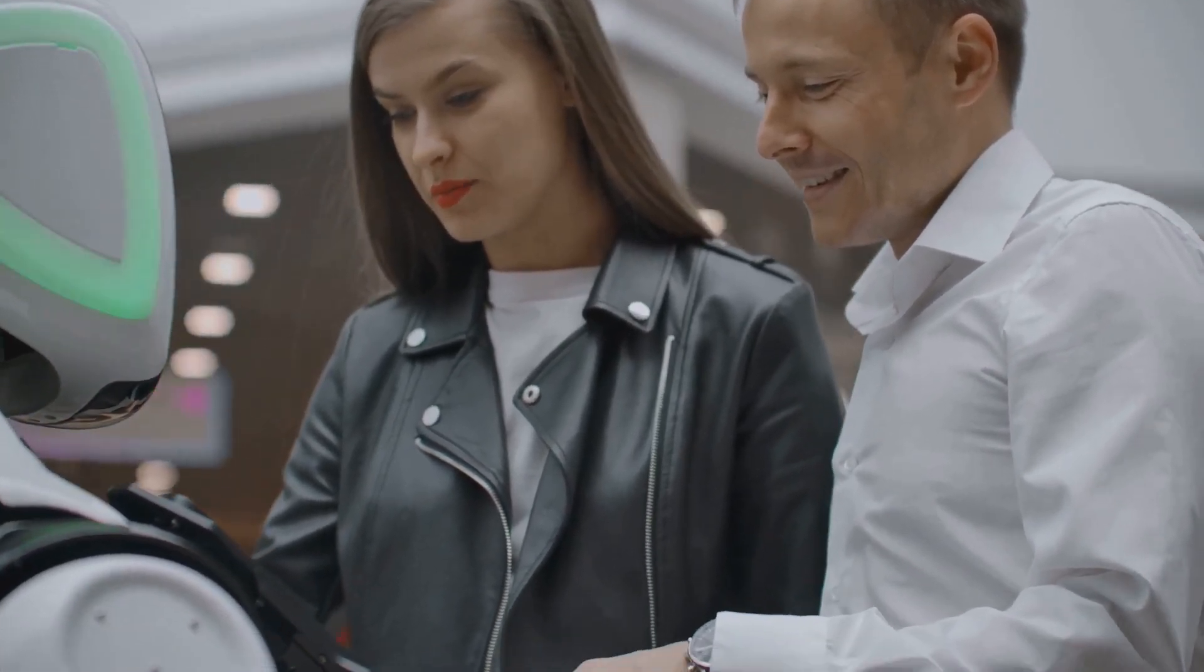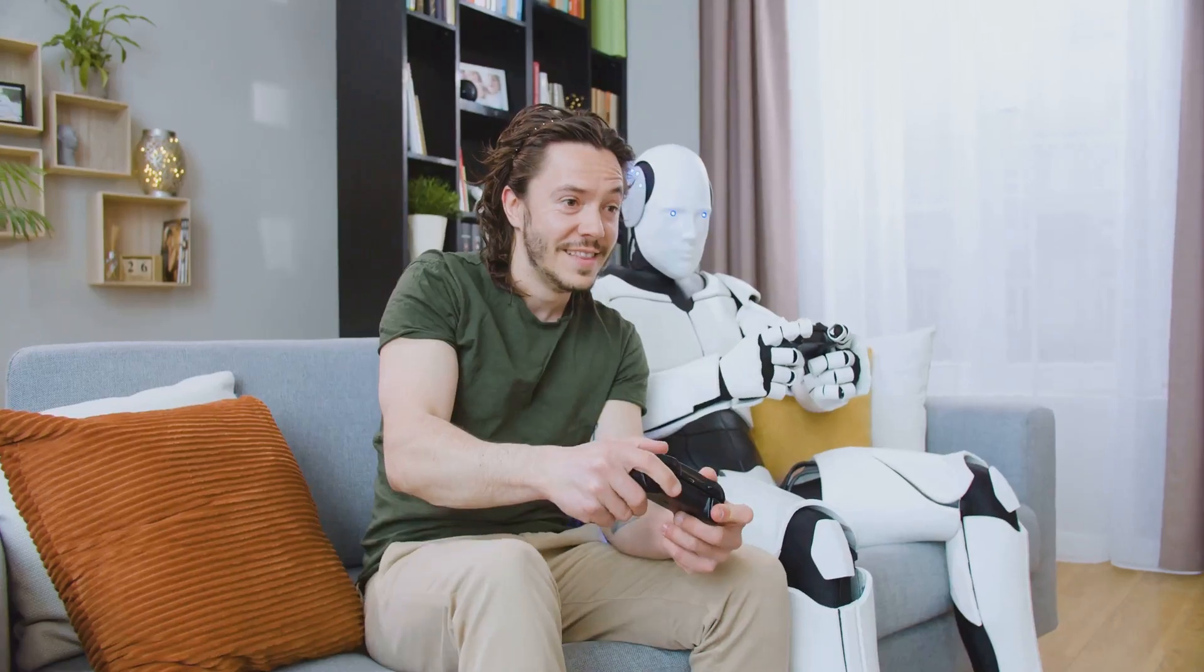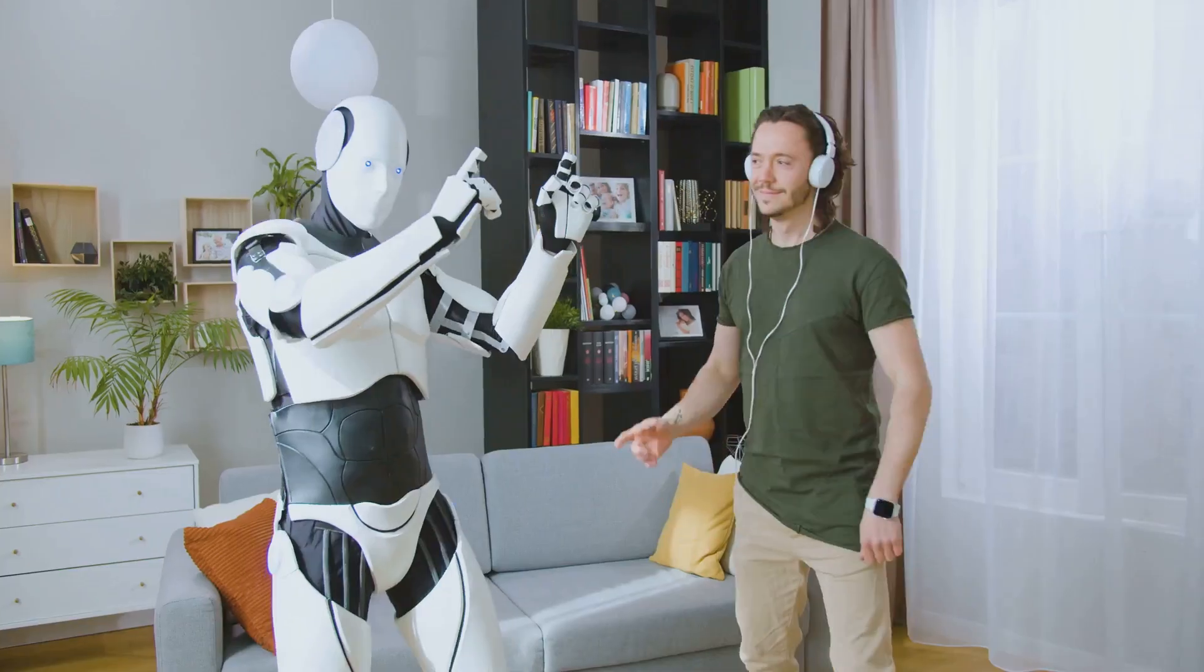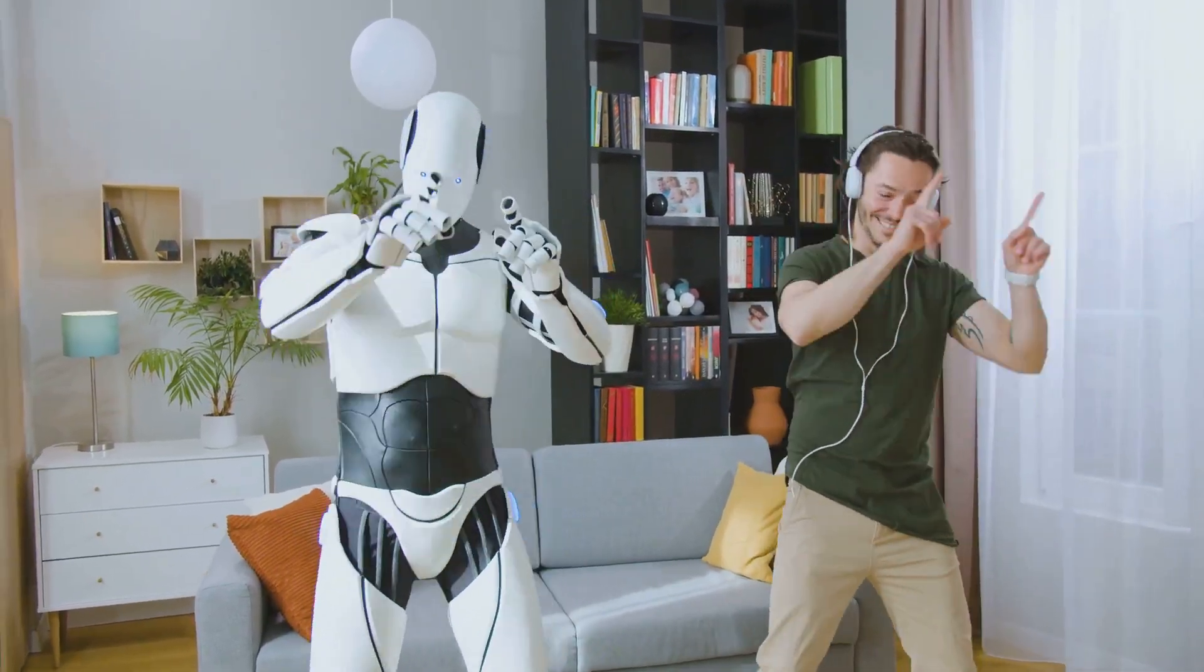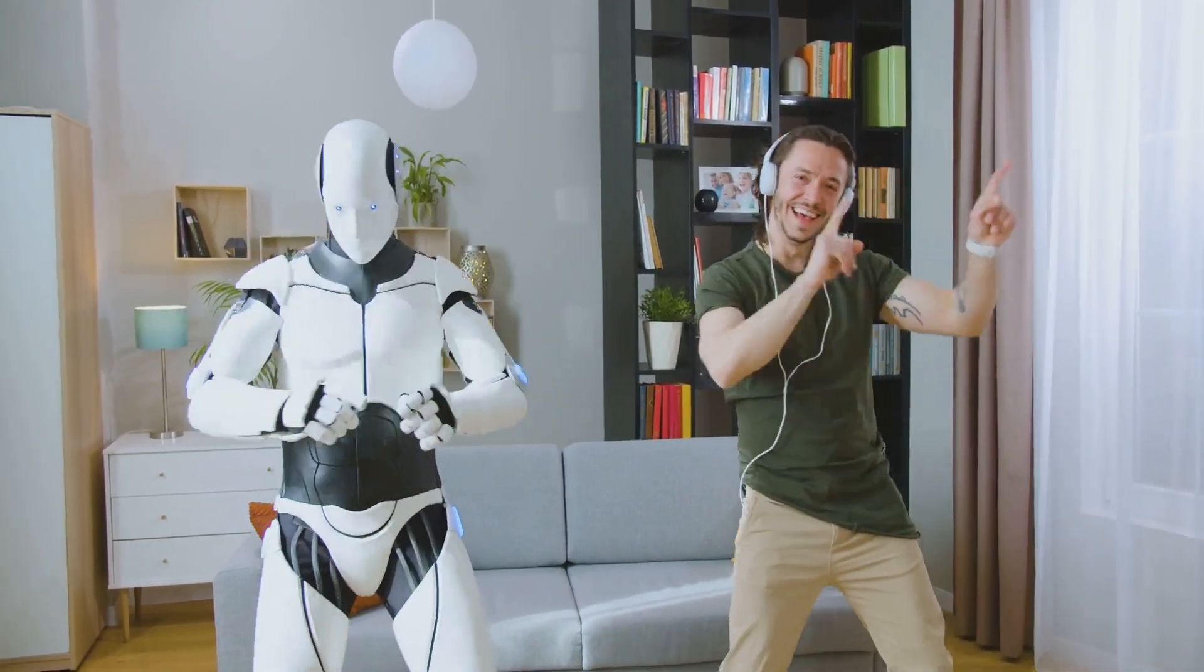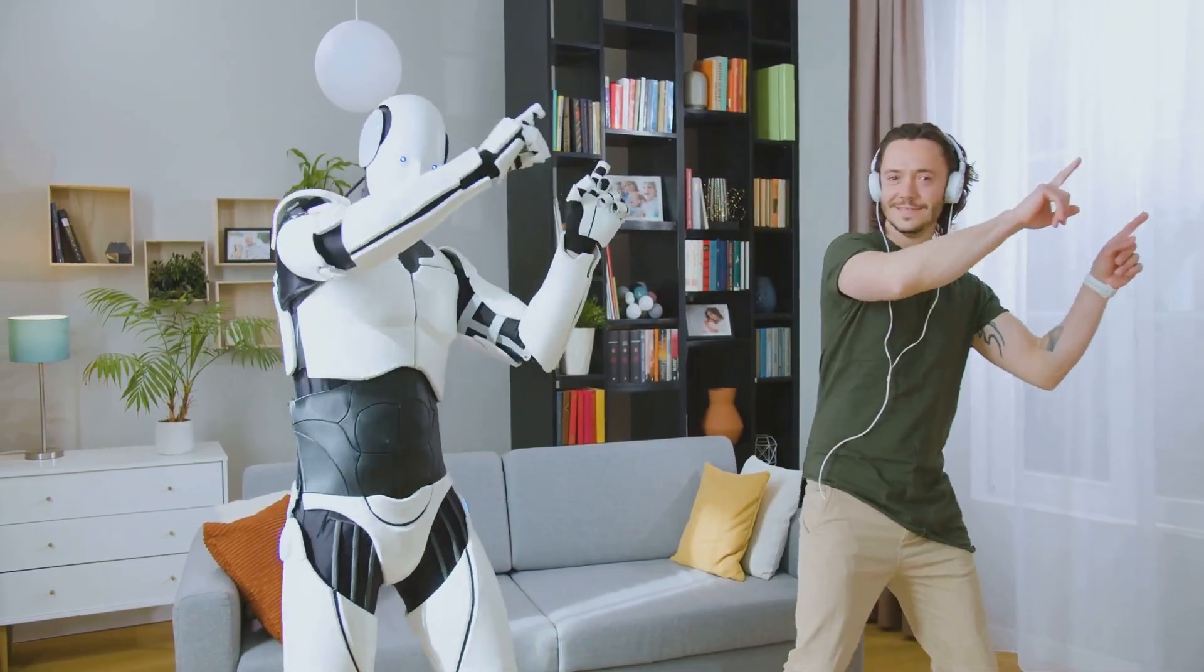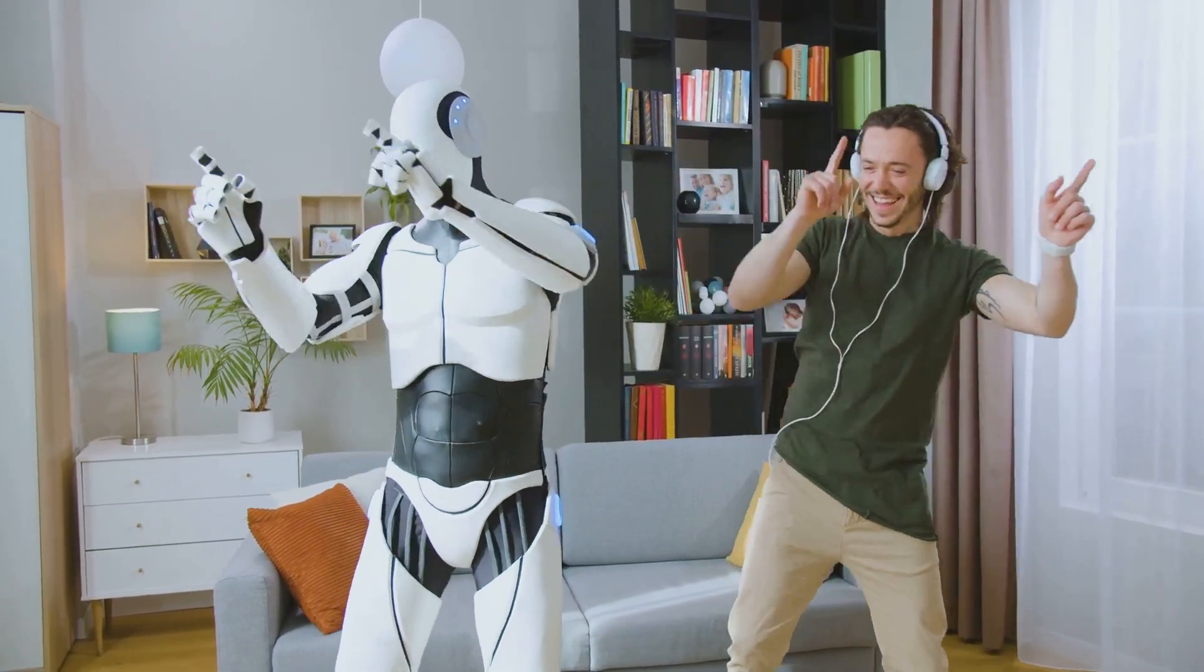The pace at which technology is advancing suggests that this could happen sooner than we think. Within the next two decades, it's likely that every household will have a robot companion. These companions will not just be appliances, but intelligent beings capable of learning, adapting and even understanding our emotions.